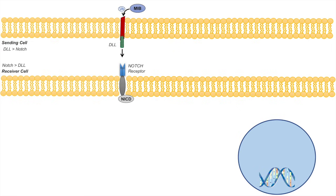Once DLL of the sending cell binds to the notch receptor of the receiving cell, there's a protease known as Atom, which cleaves the extracellular domain of the notch receptor, effectively dislodging that component of the notch receptor off of the receiving cell. This is known as S2 cleavage.